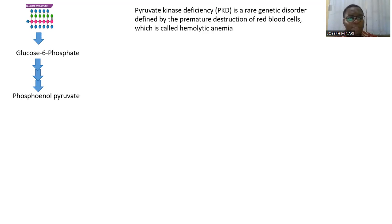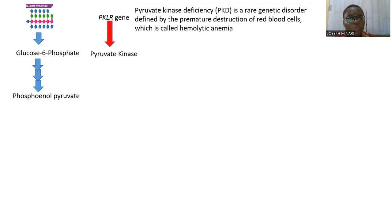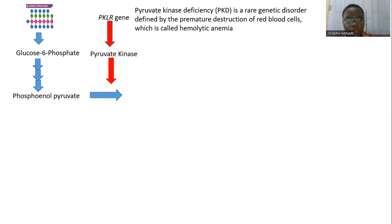Now to do this, there is a gene referred to as the PKLR gene. The PKLR gene is actually responsible for the expression of what we call pyruvate kinase, which is an enzyme. This pyruvate kinase actually helps to convert phosphoenolpyruvate to pyruvate, and at this point some ATP has been released from the glycolytic pathway.